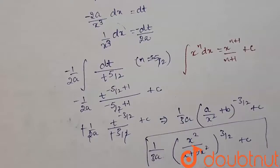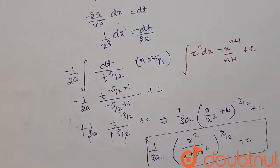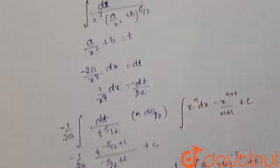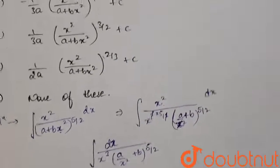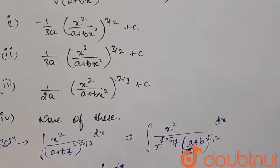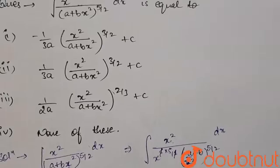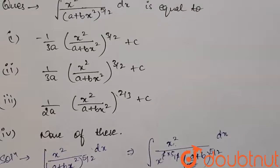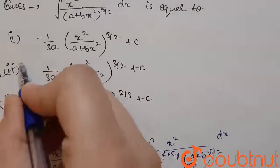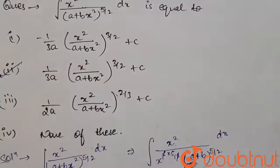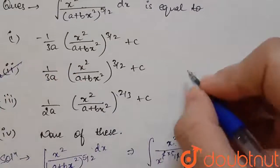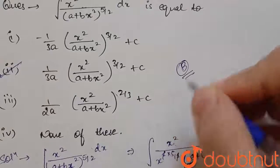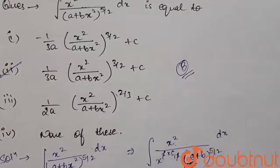Checking the options, our result 1/3a · x²/(a + bx²)^(3/2) + c matches option number 2. So our answer is option B. Thank you.